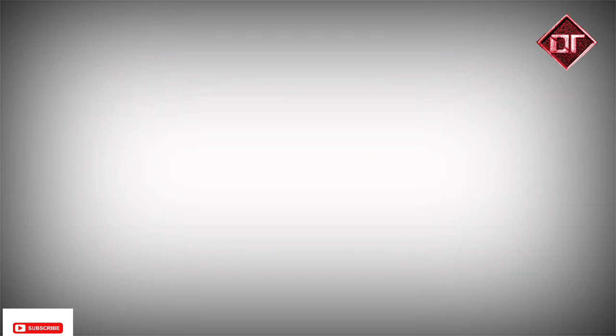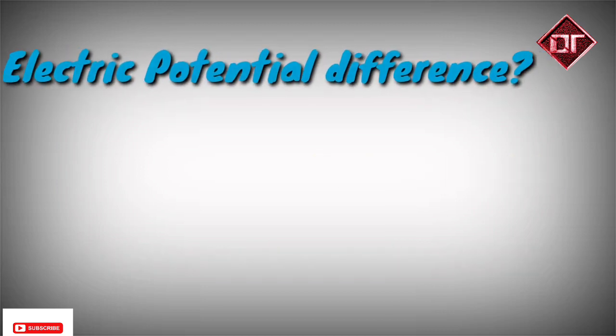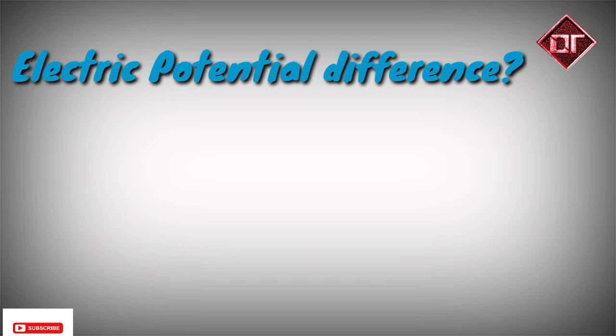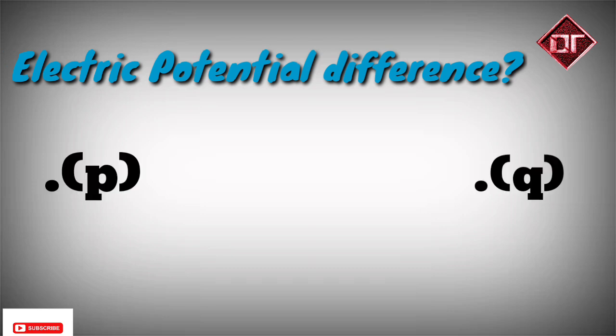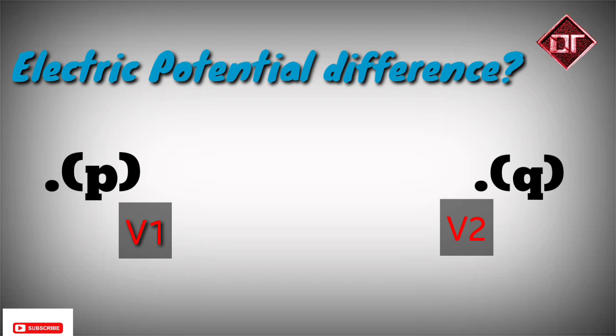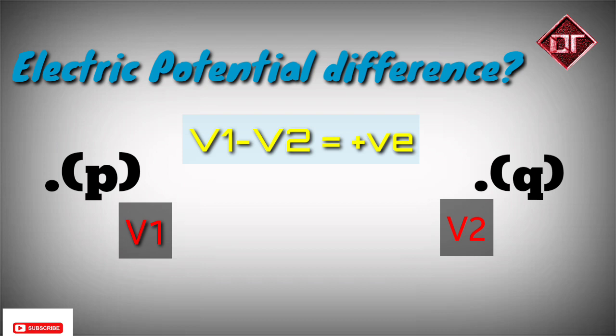Now let's look at electric potential difference. We have two points, P and Q. Point P has potential V1 and point Q has potential V2. If we calculate V1 minus V2 and get a positive magnitude, it means that the electric potential at P is greater than the potential at Q.